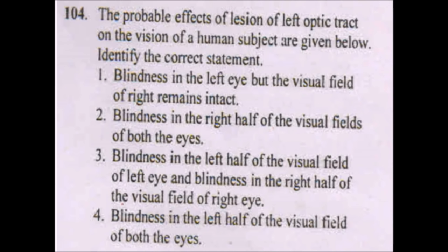Next question on the probable effects of a lesion of the left optic tract: when there is a lesion in the left optic tract, it will affect the right half of the visual field in both eyes — you will be unable to visualize the right half in both eyes. Option 1 (blindness in the left eye only) is incorrect. The correct answer is option 2: blindness in the right half of the visual field of both eyes.